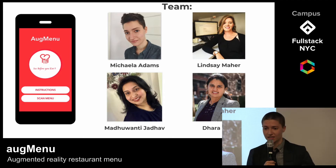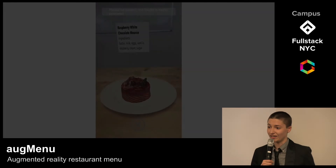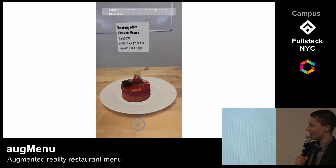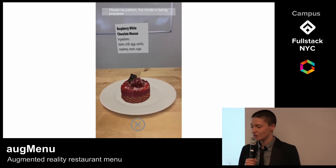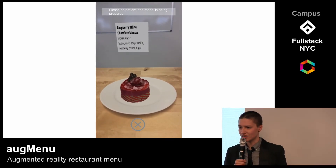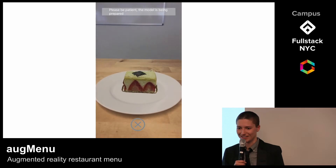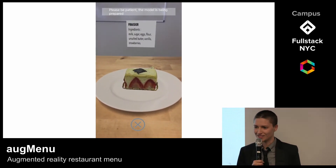AugMenu does this by taking a picture of the item text, sending it to image-to-text recognition at Google, and then we get back the string of text. Once we get the text and pull up the model, the user is able to rotate the model, view it from all angles, and even tap on the model for nutritional information. Now, Madhu is going to walk us through a typical user experience.